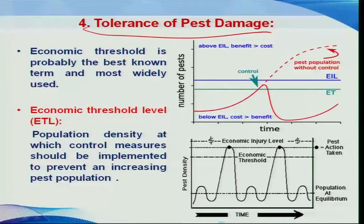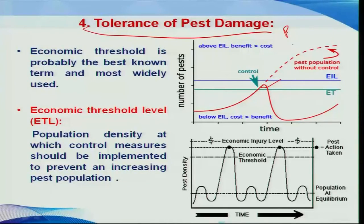Next is tolerance of pest damage. Various parameters involved in decision-making of pest management have been dealt with in detail, including economic threshold level and economic injury level, which are very important. One should always manage pests below the economic injury level, thereby getting a higher amount of benefit. One should know how to tolerate minimum pest damage, and sometimes higher pest damage can also be tolerated.